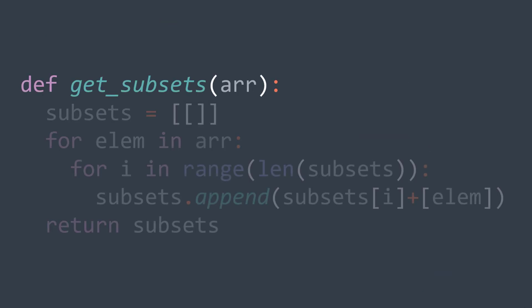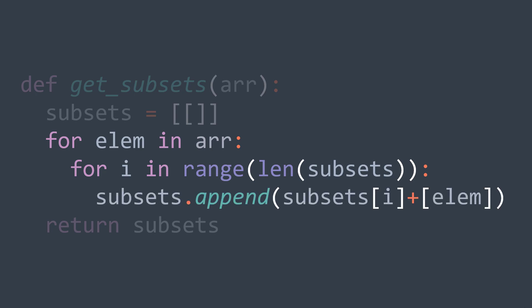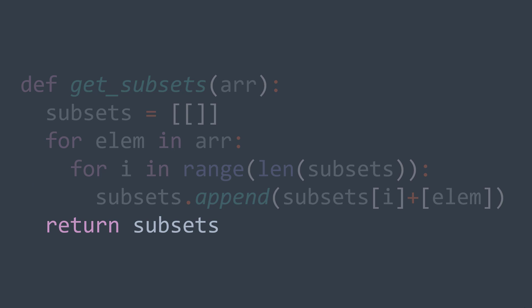In code, the subsets array initially contains the empty subset only. Then for each element in the array, we traverse the subsets we already have and for each one, we add the actual element to it and add it to the array of subsets. After the loop, we return the subsets.